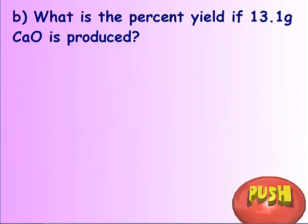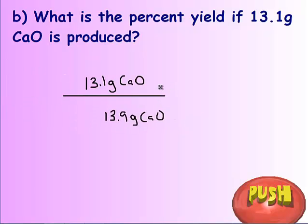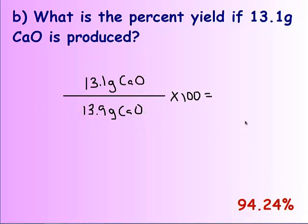The follow-up question says, well what would be your percent yield if we produced 13.1 grams? Go ahead and pause the video and restart when you have your answer. You should have put 13.1 over 13.9, which was our answer from the previous problem, and don't forget to multiply by 100, giving you 94.24 percent.